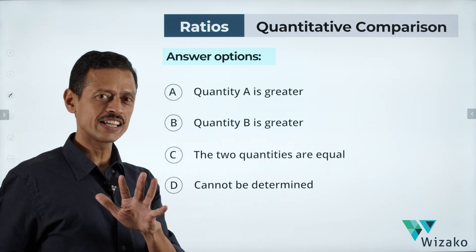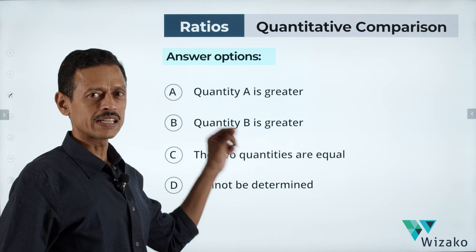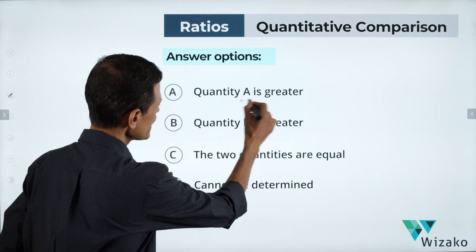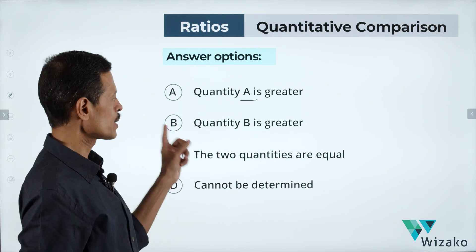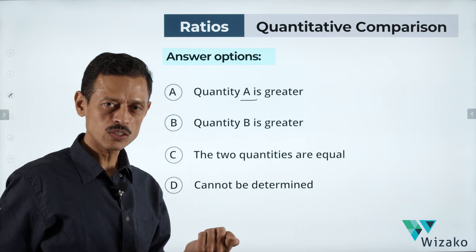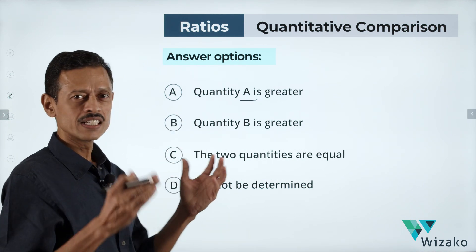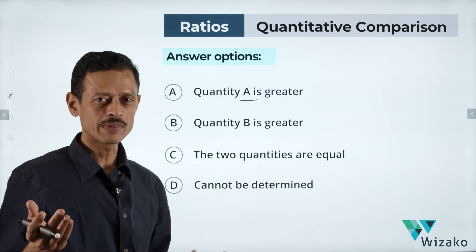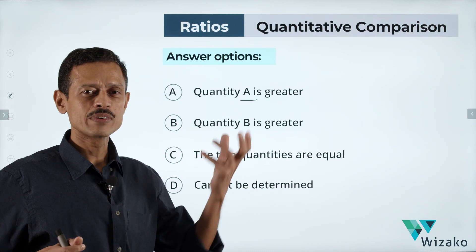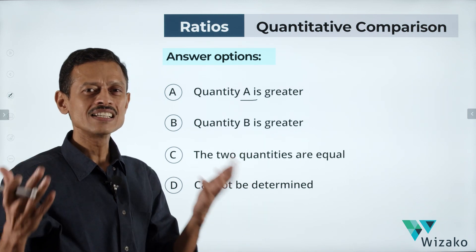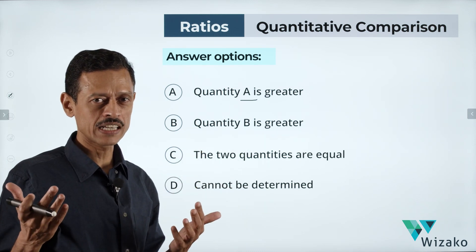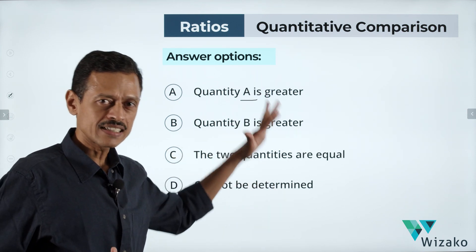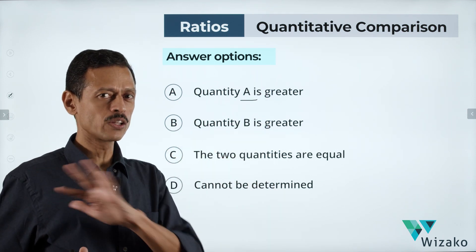The GRE answer options do not change, so get conversant and memorize them. Answer A if Quantity A is greater than Quantity B. Answer B if Quantity B is greater than Quantity A. Answer C if the two quantities are equal. Answer D if it cannot be determined — for example, if you're comparing incomparable things like height versus weight.